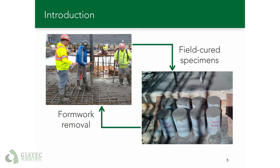There is also another variation to this method where we can have cast-in-place specimens. For this, plastic cylindrical molds are embedded in the formwork so that as concrete is poured, those are filled and cured under similar conditions as the concrete elements, and then taken out and sent for lab testing.